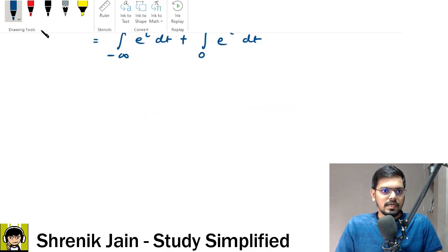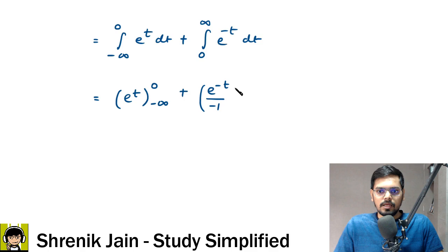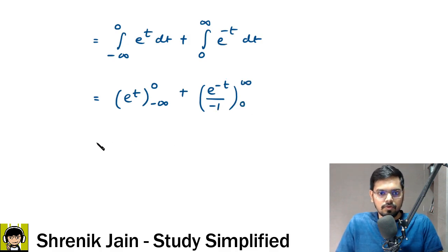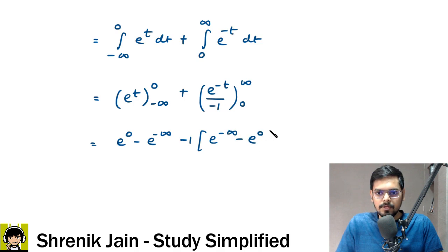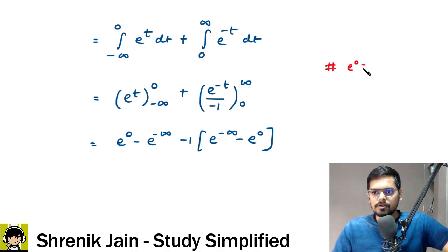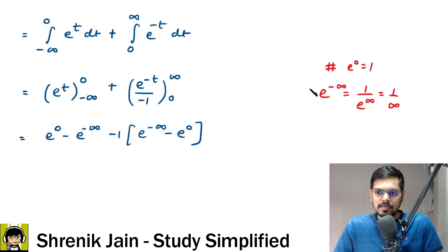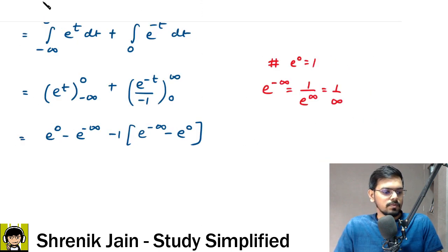Solving these integrals: e to the power t integrates to e to the power t, evaluated with upper limit 0 and lower limit minus infinity. For the second integral, e to the power minus t integrates to e to the power minus t divided by minus 1, evaluated from 0 to infinity. Now, e to the power 0 is 1, and e to the power minus infinity equals 1 over infinity, which equals 0.